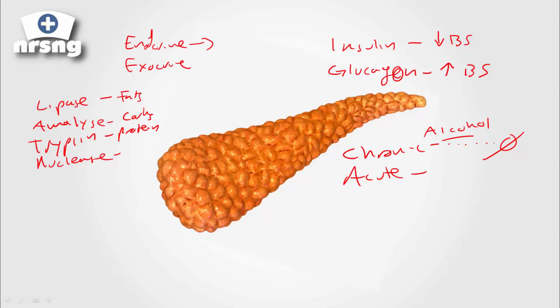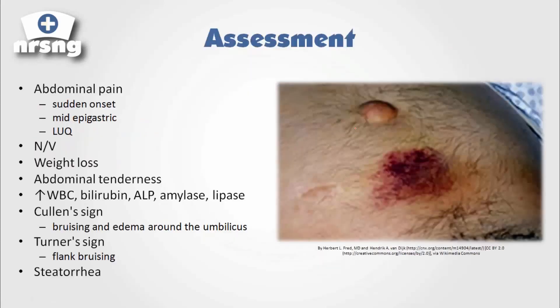In alcohol abusers, the pancreas actually starts to auto-digest — it begins to eat itself up. Once it begins to do that, it actually loses the ability to secrete its hormones and basically loses its function as the pancreas.